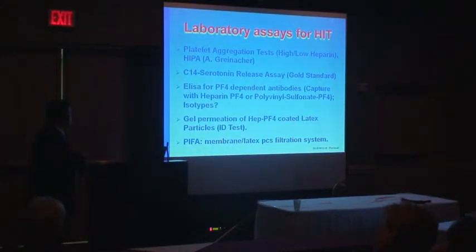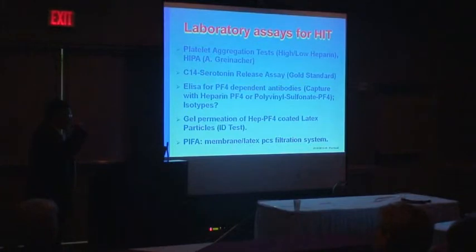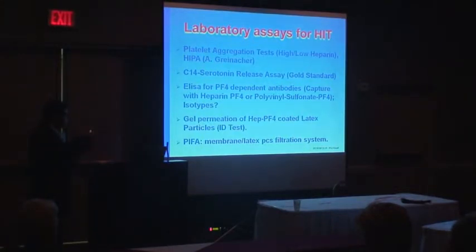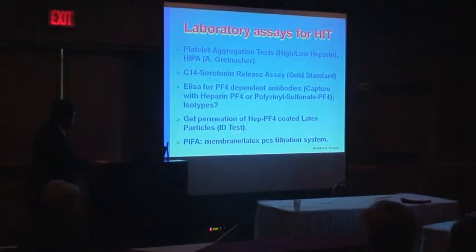New assays are evolving to focus more on the IgG isotype, which shows higher specificity and sensitivity for clinical HIT. There is also a latex assay using the PaGIA technology from Diamed, which uses a gel with latex particles coated with PF4. If antibodies are present, aggregates form and the latex cannot enter the gel; if there is no antibody, latex particles penetrate the gel and are collected at the bottom. There is also a PFA immunofiltration assay using latex particles.